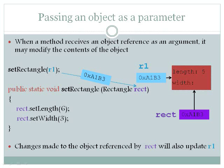When a method receives an object referenced as an argument, it may modify the contents of the object. Below is depicted a diagram using the method setRectangle, which is passed R1.